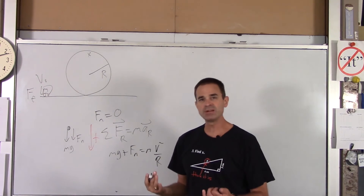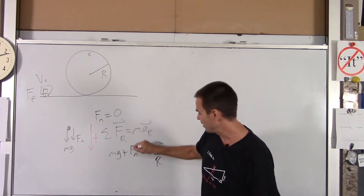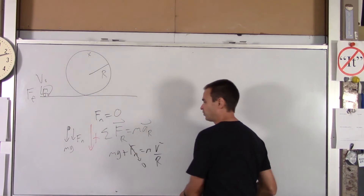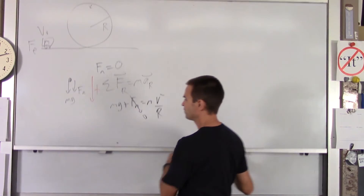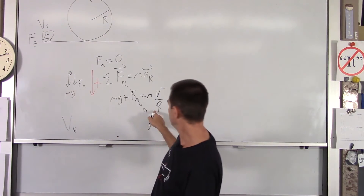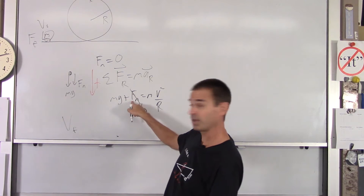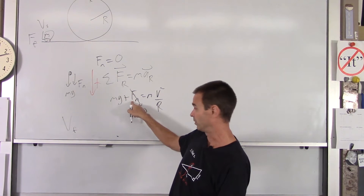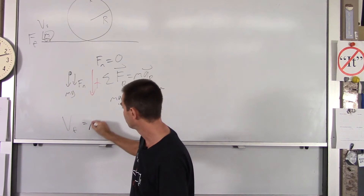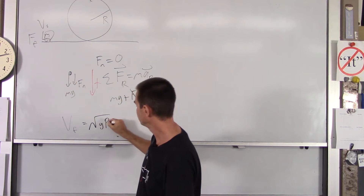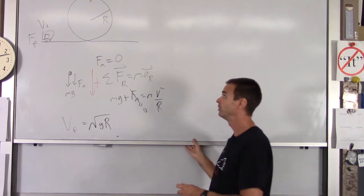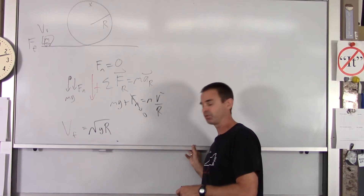At the minimum speed for passengers to just get around the loop without falling out, FN approaches zero. Applying Newton's second law in the radial direction: MG + FN = M·(v²/R). Setting FN to zero, the M's drop out, and solving for v gives v_final = √(gR). That's our minimum speed at the top of the ride.